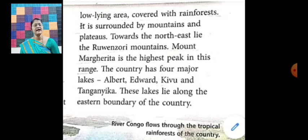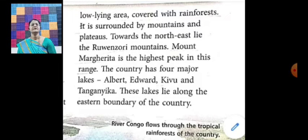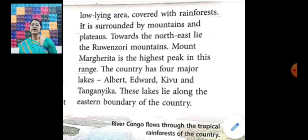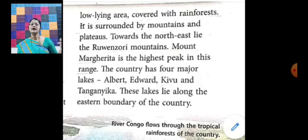Towards the north east lies the Ruwenzori mountain range. Mount Margherita is the highest peak in this range. The country has four major lakes: Albert, Edward, Kivu, and Tanganyika. These lakes lie along the eastern boundary of the country.